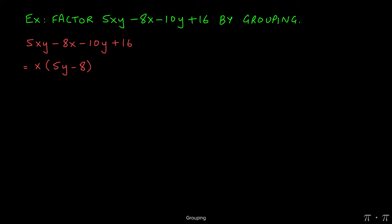From the last two terms, we can factor out a 2, which goes evenly into 10 and 16. Dividing negative 10y and 16 by 2, we get negative 5y and positive 8.